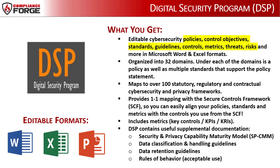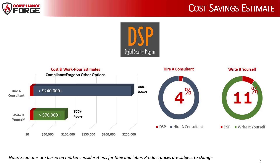The DSP is also formatted so it can be easily imported into popular GRC platforms. From a cost savings perspective, for your internal staff to generate comparable documentation to the DSP, it would take them an estimated 900 internal staff hours, which equates to a cost of approximately $76,000 in staff-related expenses, and incur about 12 to 24 months of development time, where your staff would be diverted from other work.